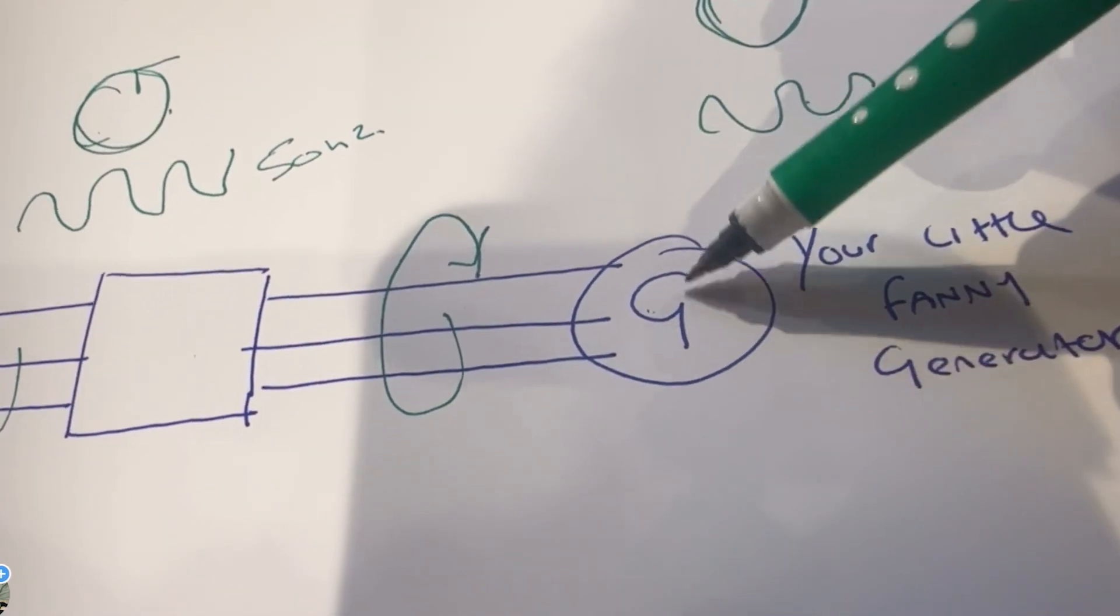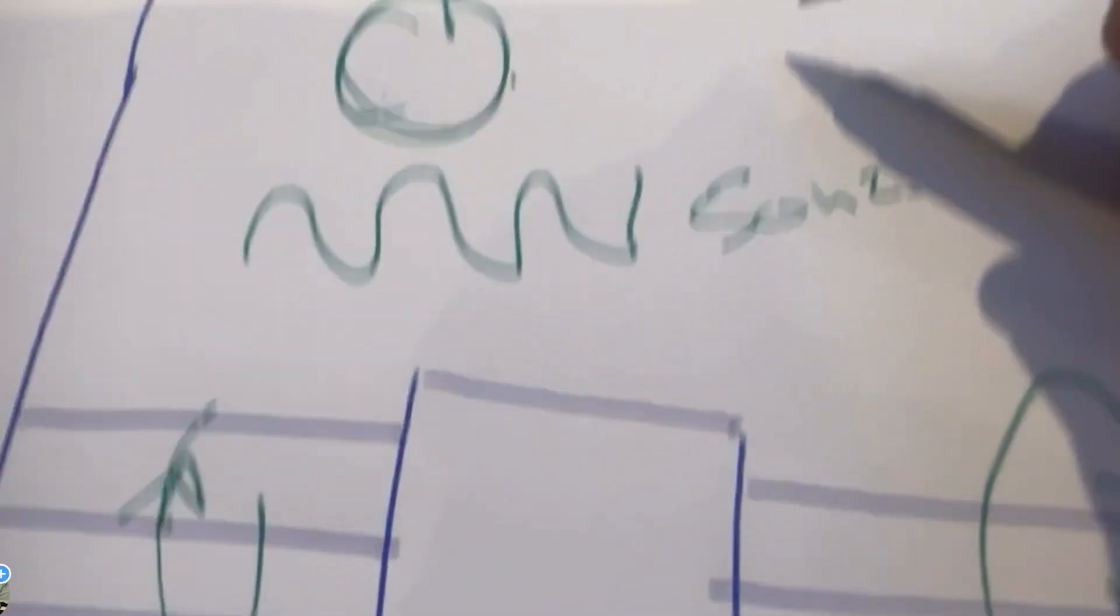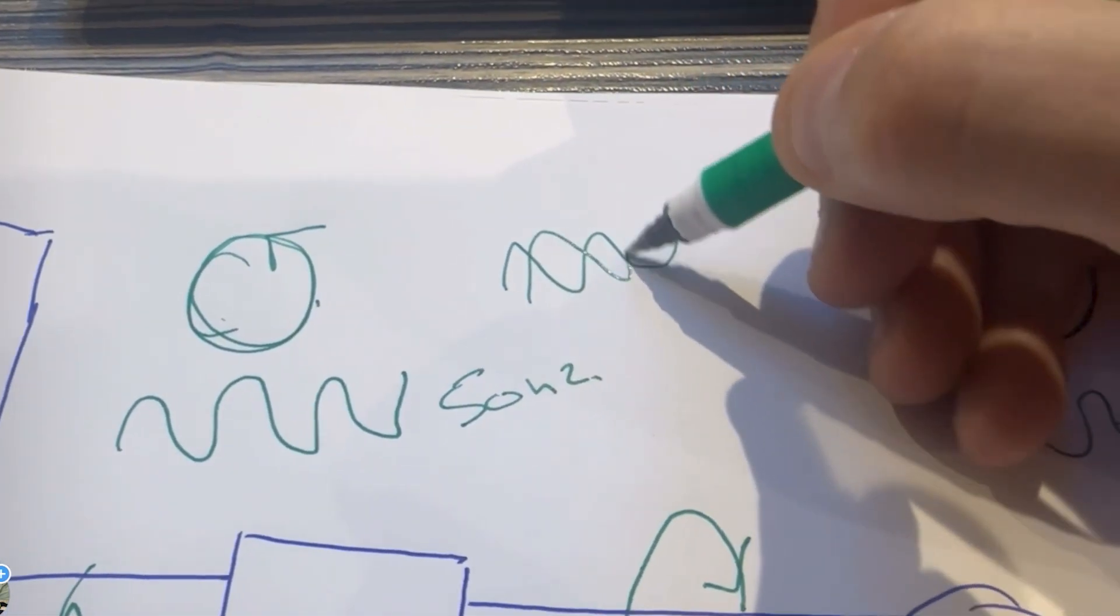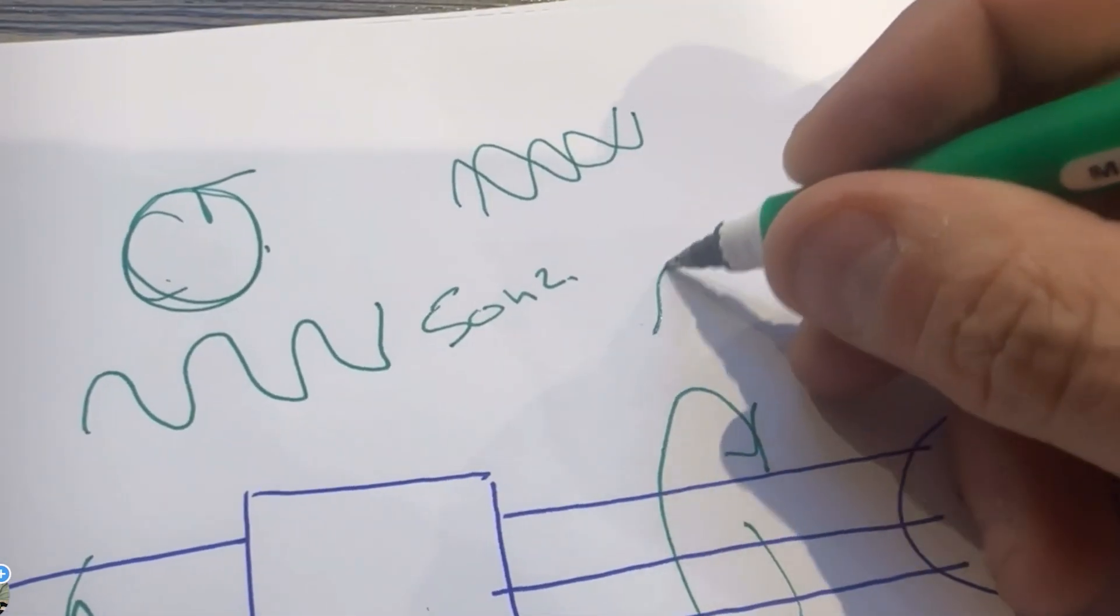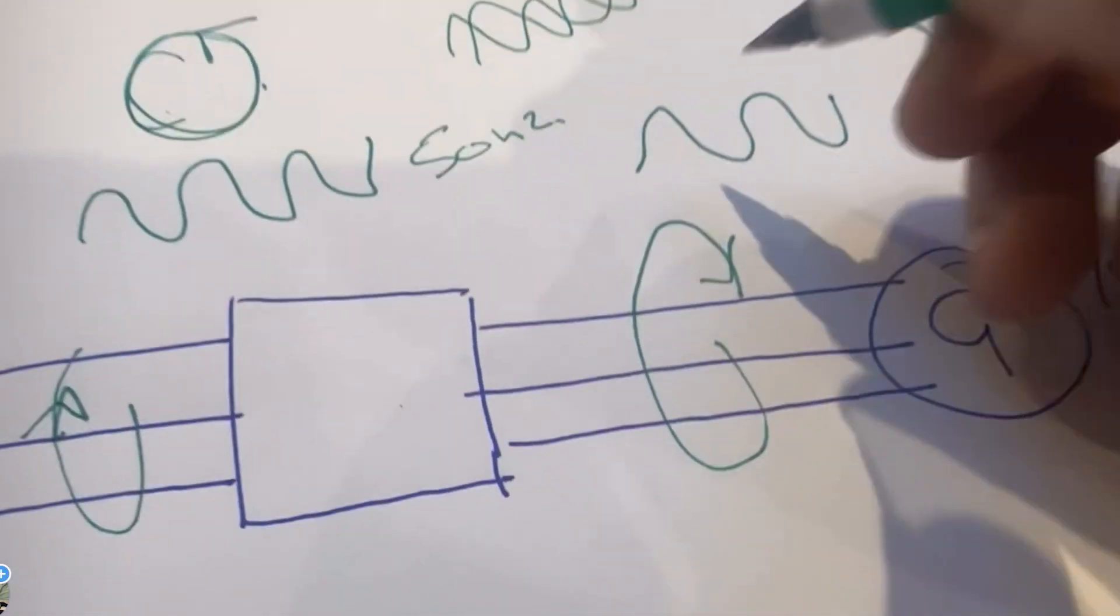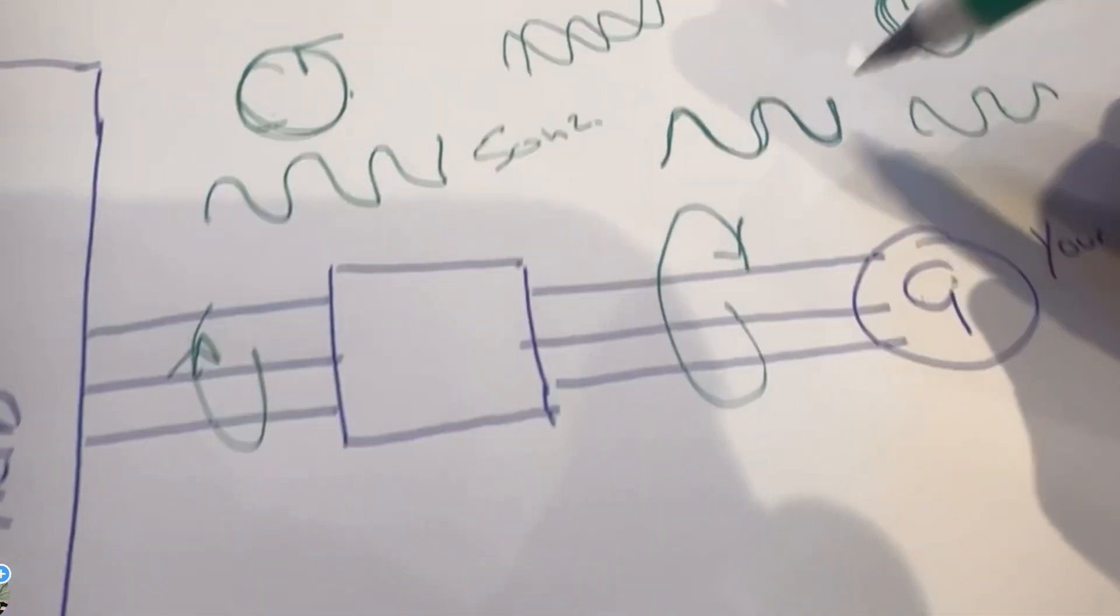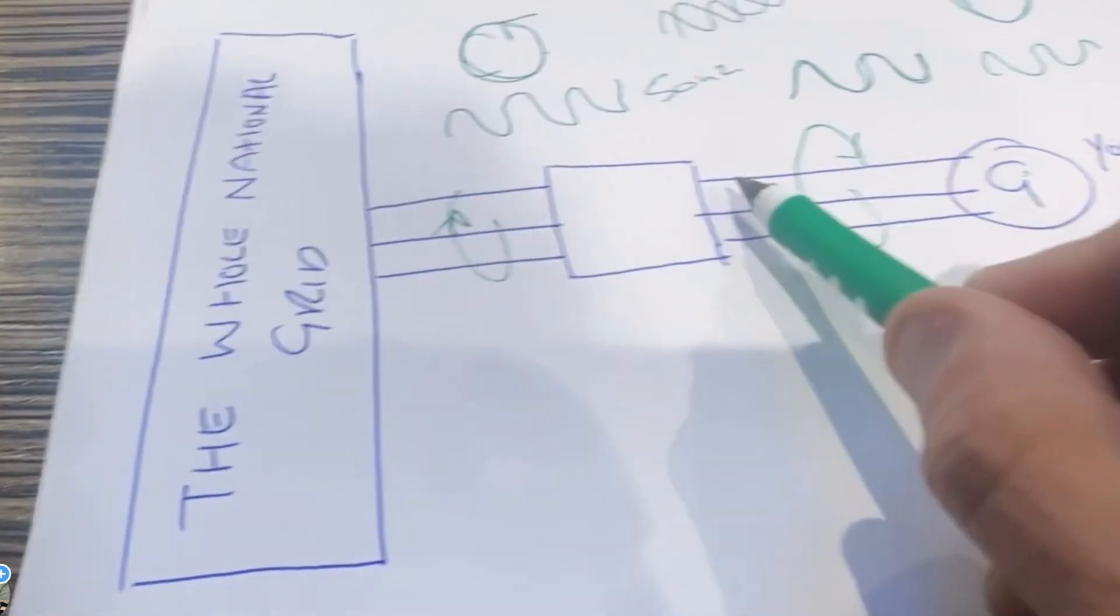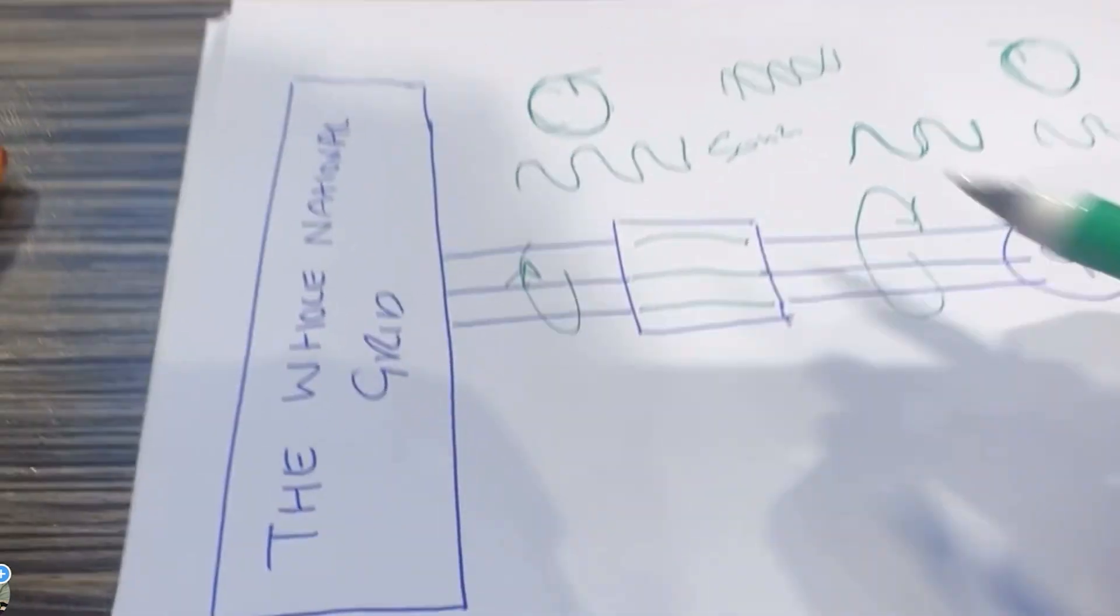However, the generator's frequency could change. Basically what we want to do is when the generator is spinning, this frequency might be doing this and the generator's frequency might be doing that. They are not matched up, but we want them to be like this and we want the other one to just sit on top of it like that.